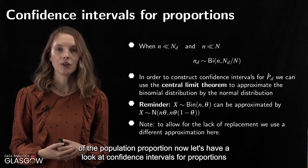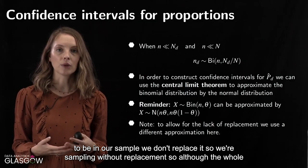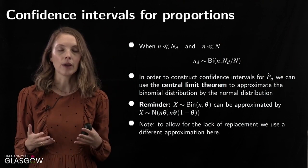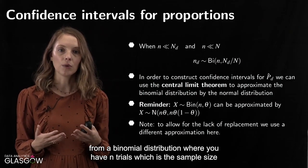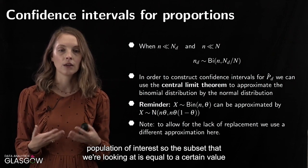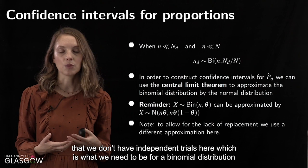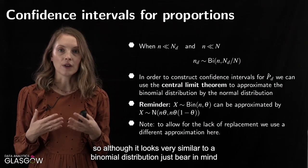Now let's look at confidence intervals for proportions. Because we sample without replacement — we don't replace each element after selecting it — the trials are not independent, which means this isn't strictly a binomial distribution. However, when our sample size is much smaller than both the subset size and the total population size, we can approximate the number of sampled elements from our subset as a binomial distribution with parameter n and ND divided by capital N.